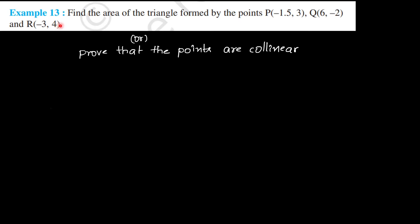One more question — this question will tell you: prove that the points are collinear. For three points being collinear, earlier we used the distance formula. Now we are going to use the best method when the question is asked about collinearity — the area of triangle formula.